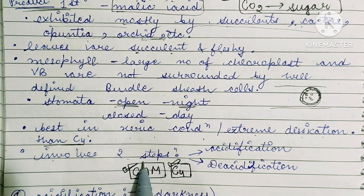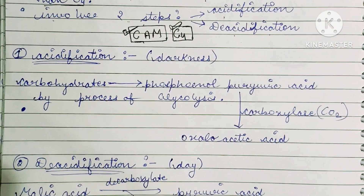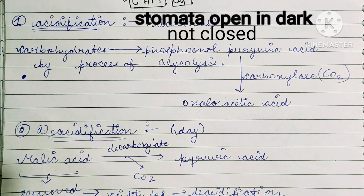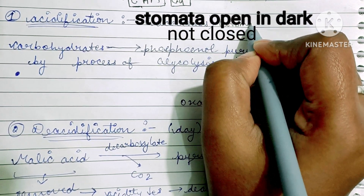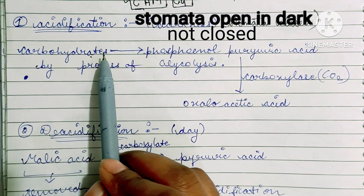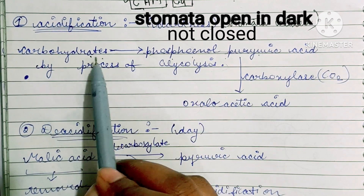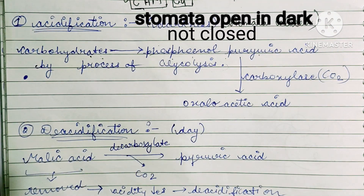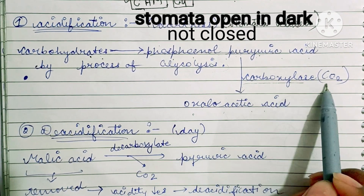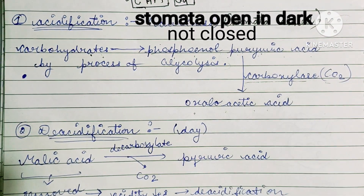Next come the steps involved in the CAM cycle. There are two steps: acidification and deacidification. The first step is acidification, which occurs in darkness. During the night, when stomata are open, carbohydrates are converted into phosphoenol pyruvic acid through glycolysis. Phosphoenol pyruvic acid then converts into oxaloacetic acid. This is the process of acidification in the dark phase.